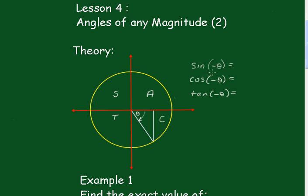So the sine of minus theta must be equal to minus the sine of theta. And here the cos of minus theta, because we're in the fourth quadrant, is going to be just positive — it's the cos of theta. And the tan of minus theta is going to be obviously negative: minus tan theta.